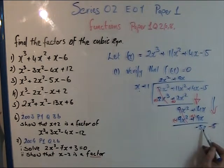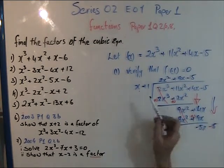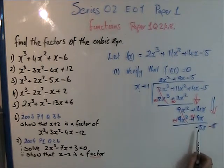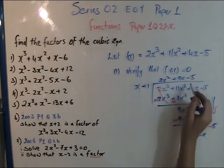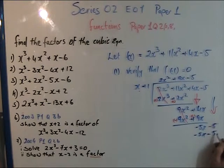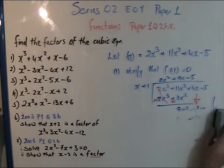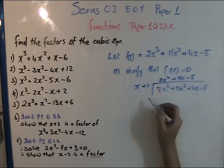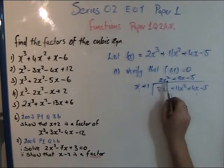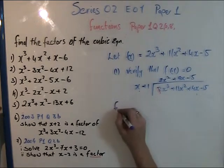x goes into -5x: that's -5 times (not plus, because we need to get a minus). So -5 × x = -5x, and -5 × 1 = -5. Change the sign — it becomes plus — and they both cancel. No remainder, so (x + 1) divides evenly. The result of the division is 2x² + 9x - 5.